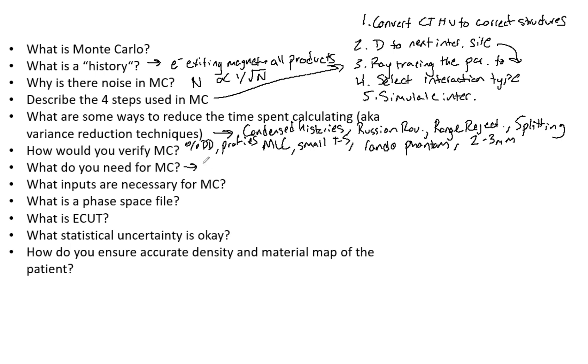First you need cross section data. Cross section—essentially you're going to find the probabilities that certain interaction types are going to happen. Because we are simulating each and every interaction, and we've talked about some of these variance techniques, it has to know what the probabilities are.